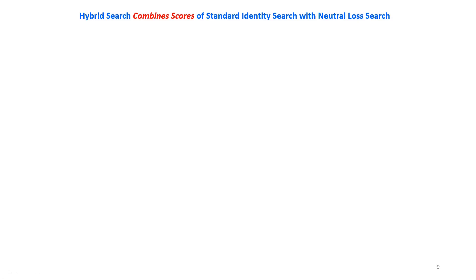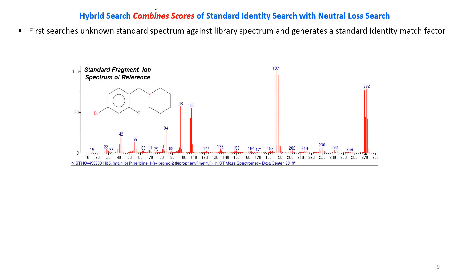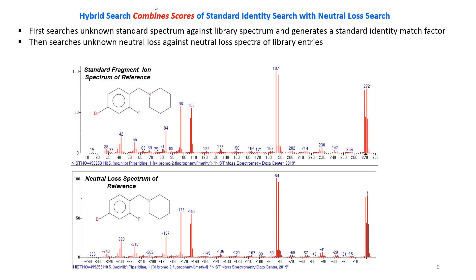The hybrid search combines scores of a standard identity search with that of a neutral loss search. It first searches the unknown spectrum against the library spectra and generates a standard identity match factor. Then it searches the unknown neutral loss spectrum against the neutral loss spectra of all library entries. The neutral loss spectrum starts at low mass going to high, showing the difference between the highest ions in the spectrum and its fragments — comparing losses rather than fragments. It then generates a combined hybrid score shown in the results.